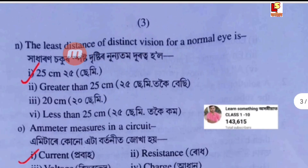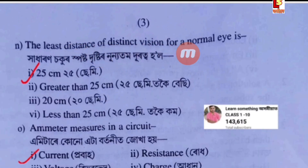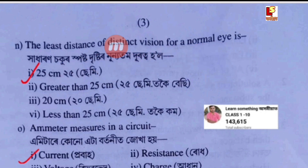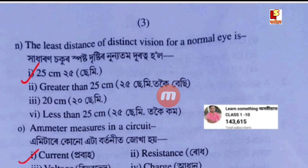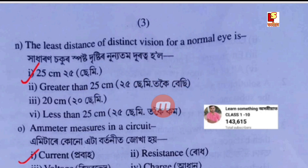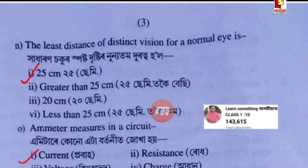The least distance of distinct vision for a normal eye is — Option A: 25 cm. Option B: 25 cm. Option C: 20 cm. Option D: less than 25 cm.